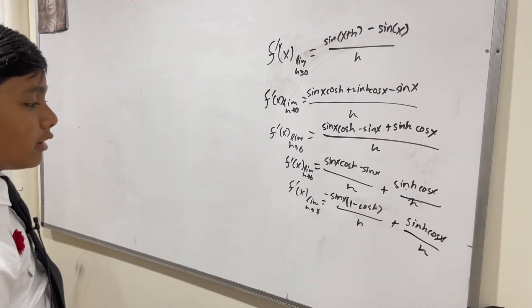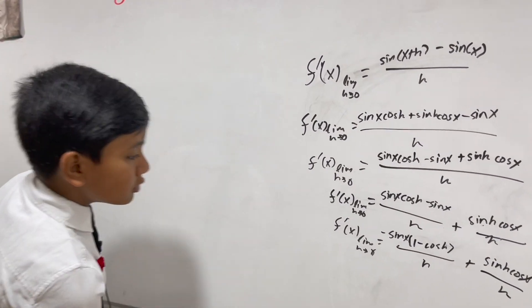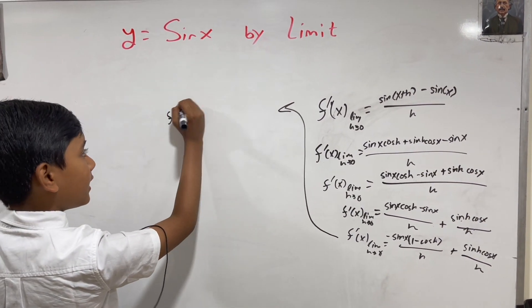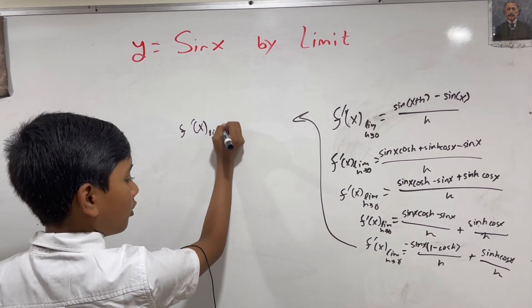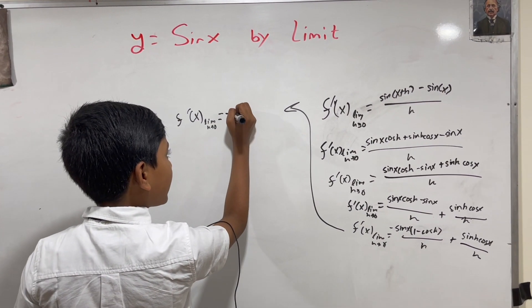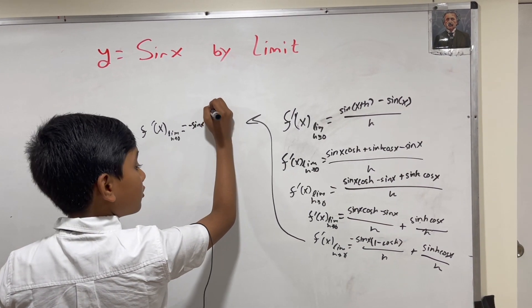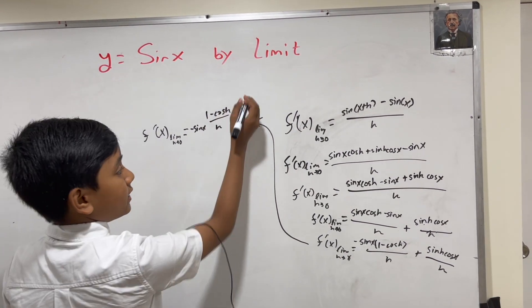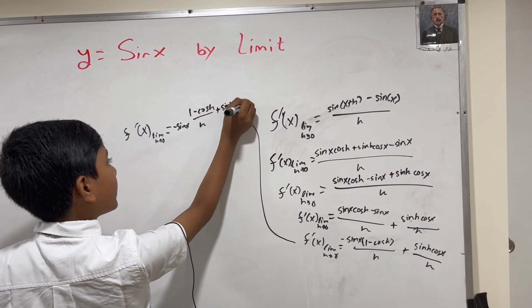Now what we're going to do is take the limit of both of these. f prime of x equals the limit as h approaches zero. We're going to put that negative sine x out front, then 1 minus cosine h over h, then cosine x times sine h over h.